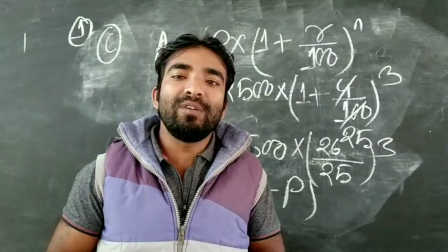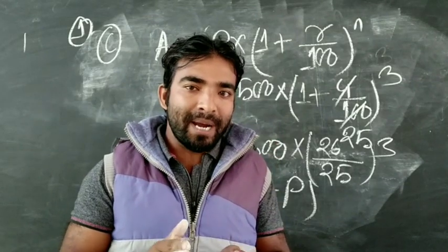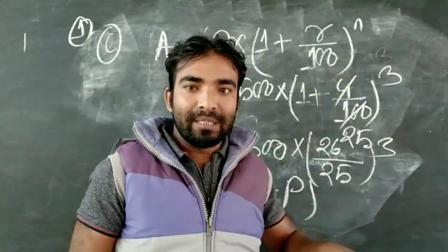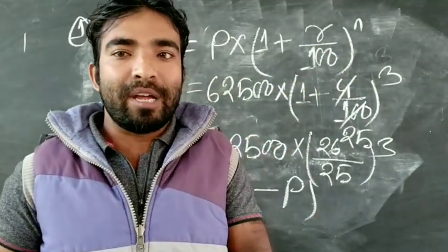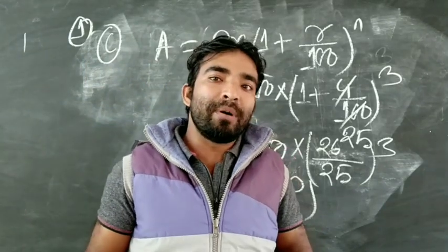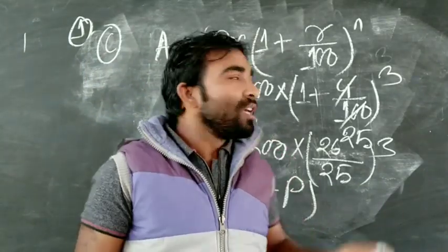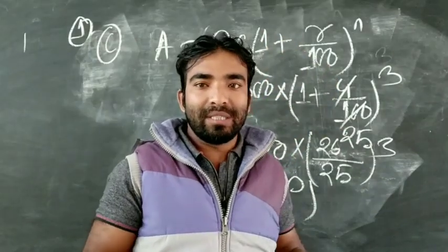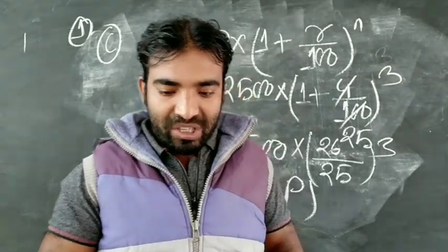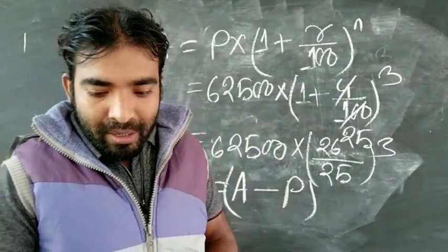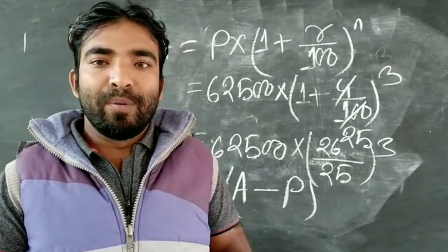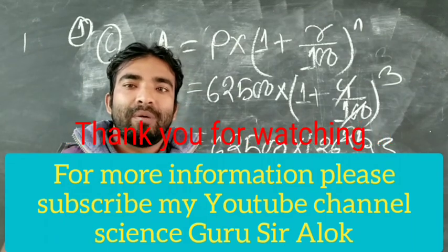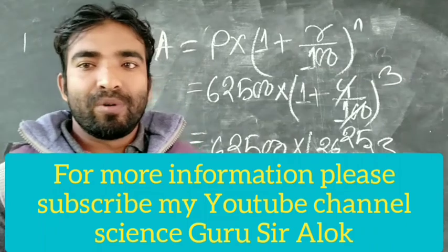One important thing to remember: when the Rate of Interest is given per annum and interest is compounded half-yearly, you must convert both the rate and the number of periods accordingly. When rate and compounding are both annual, apply the formula directly with no changes. I hope you understand. If you have any doubts or queries, please leave a comment. Thank you for watching.